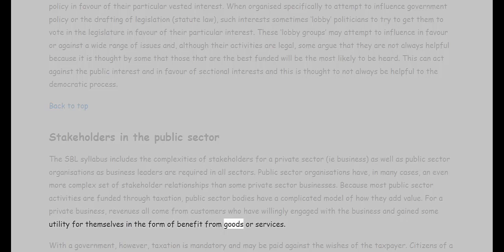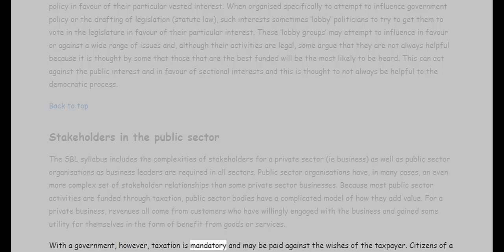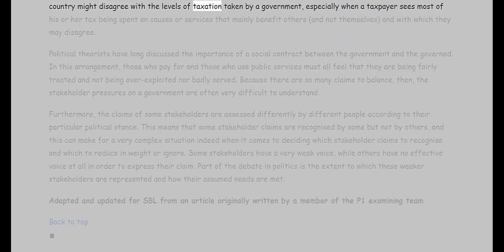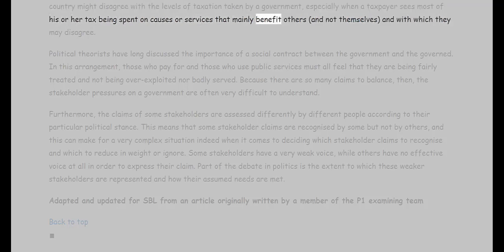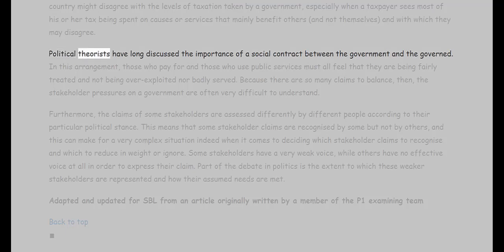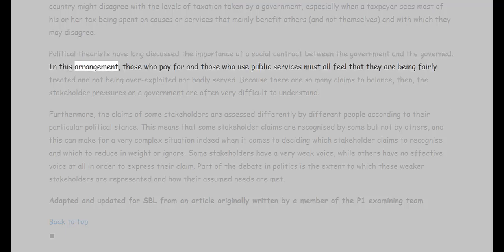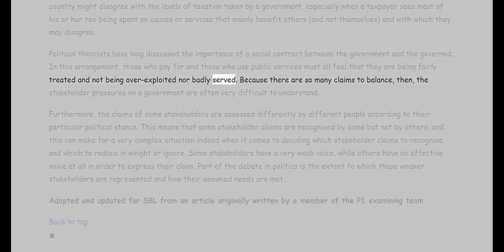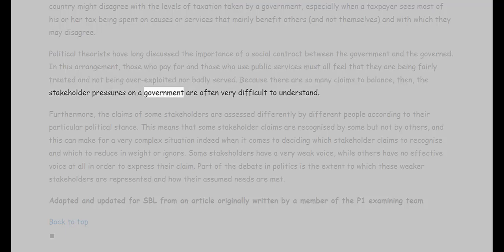For a private business, revenues come from customers who have willingly engaged with the business and gained utility from goods or services. With government, however, taxation is mandatory and may be paid against the wishes of the taxpayer. Citizens might disagree with the levels of taxation, especially when a taxpayer sees most of their tax being spent on causes or services that mainly benefit others. Political theorists have long discussed the importance of a social contract between the government and the governed, whereby those who pay for and those who use public services must all feel they are being fairly treated.